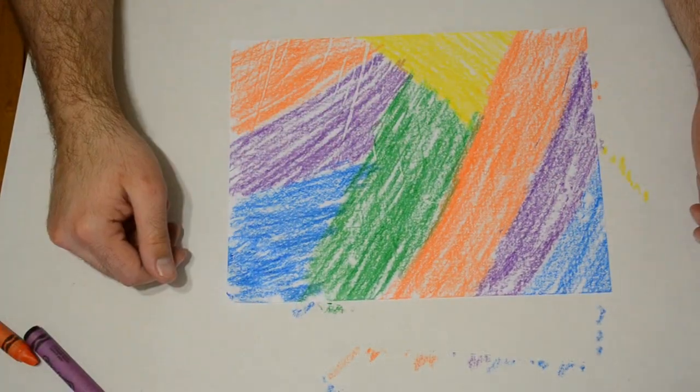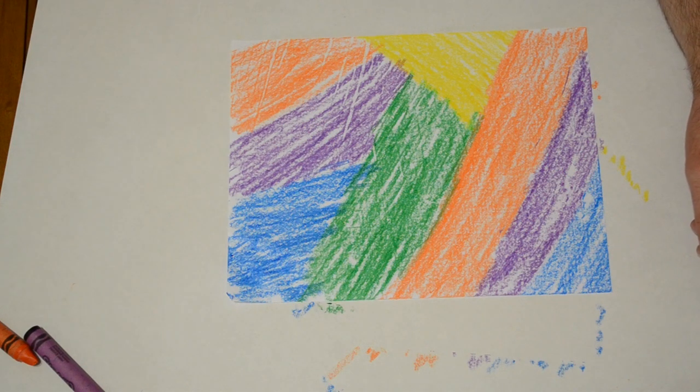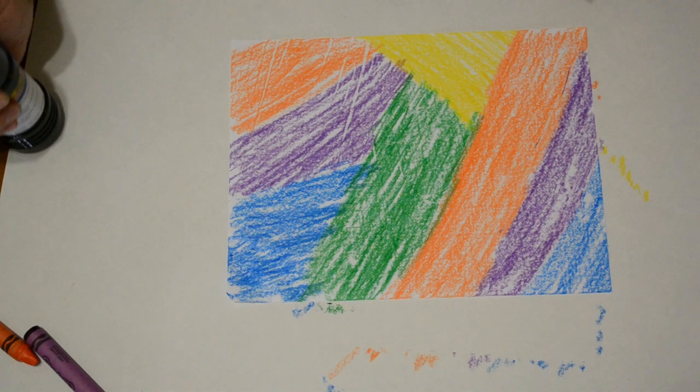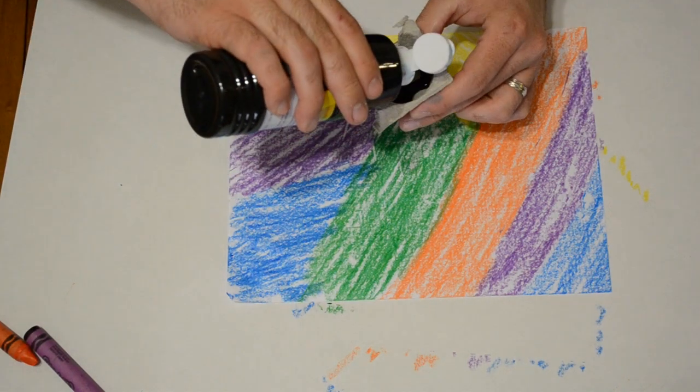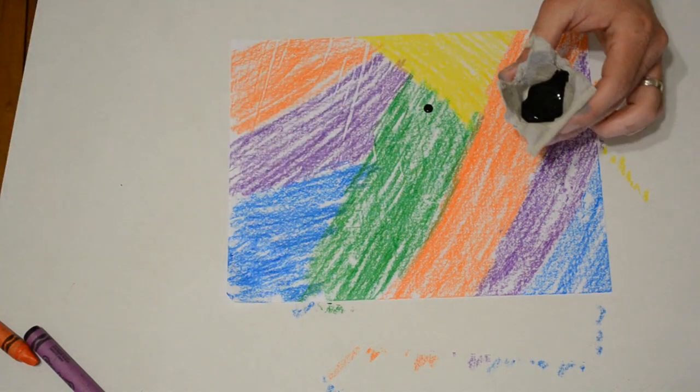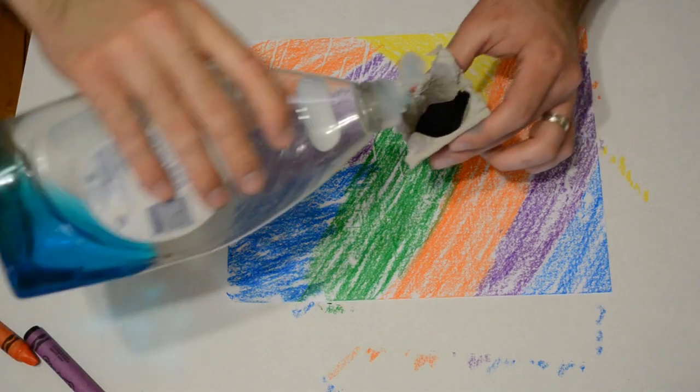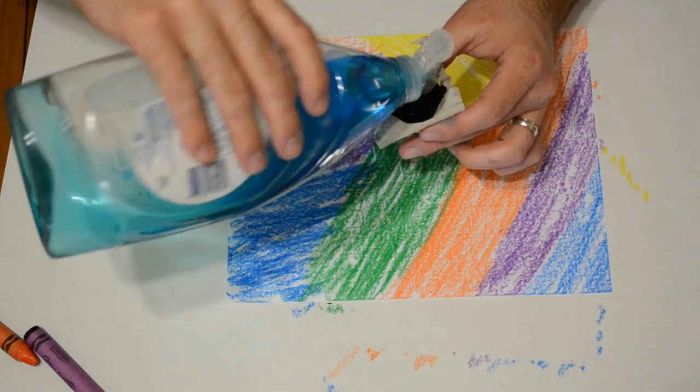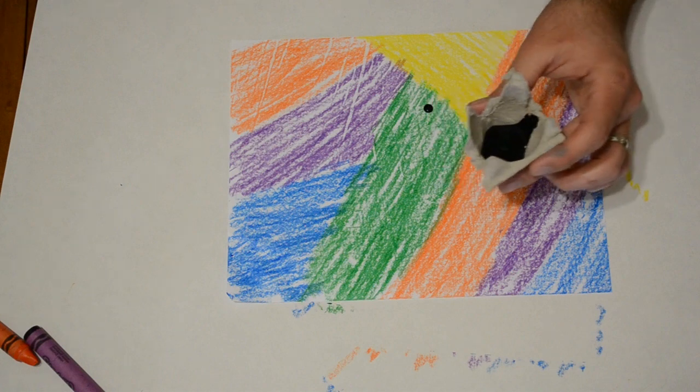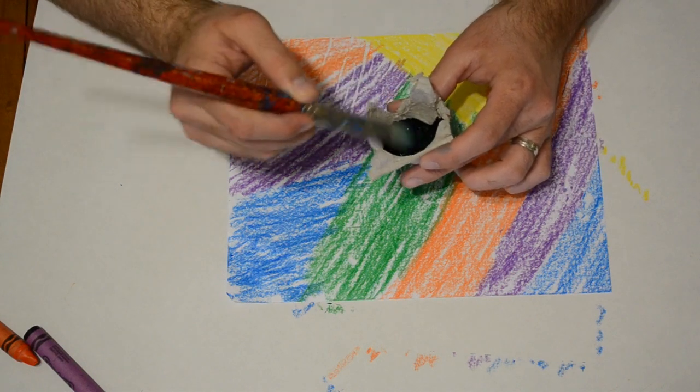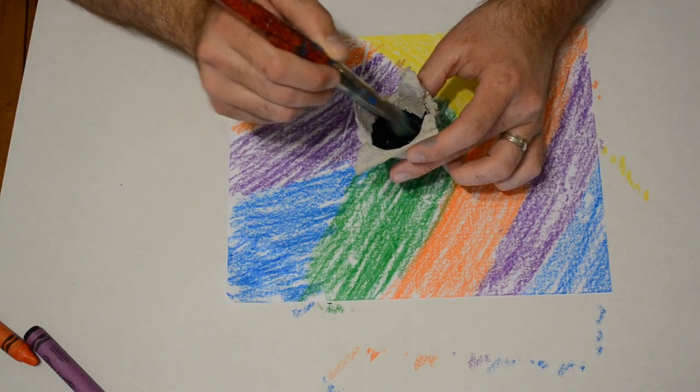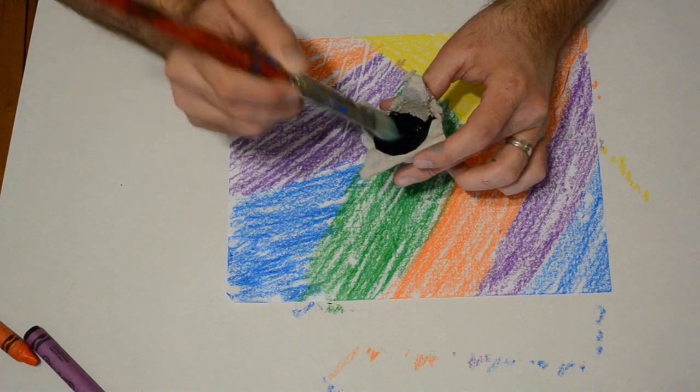Once you have your whole page covered in crayon, the next step is to do a black wash of your paint over top. So you are going to take your black paint. Now this is where the dish soap comes in. A little drop of dish soap will help the paint stick to the wax crayon. If you don't have it, that's okay. It will still work. The dish soap just makes things a little nicer.